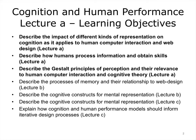The unit objectives for this lesson are: describe the impact of different kinds of representation on cognition as it applies to human-computer interaction and web design; describe how humans process information and obtain skills; and describe the gestalt principles of perception and their relevance to human-computer interaction and cognitive theory.